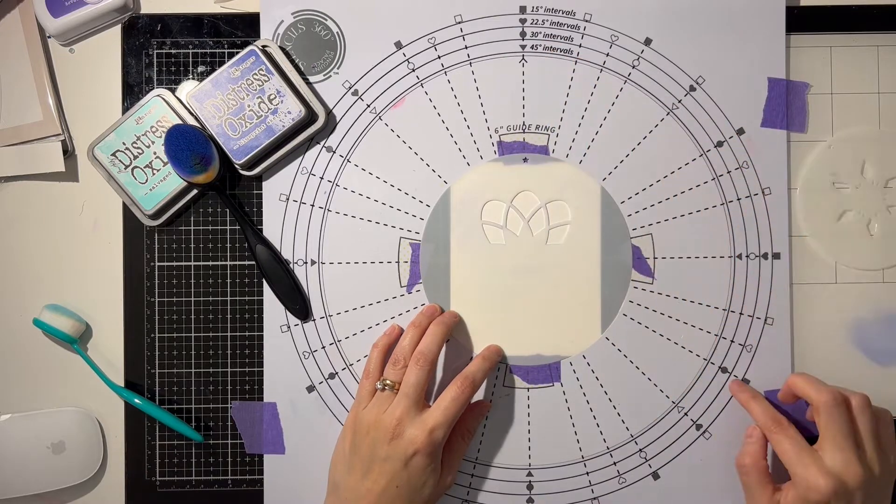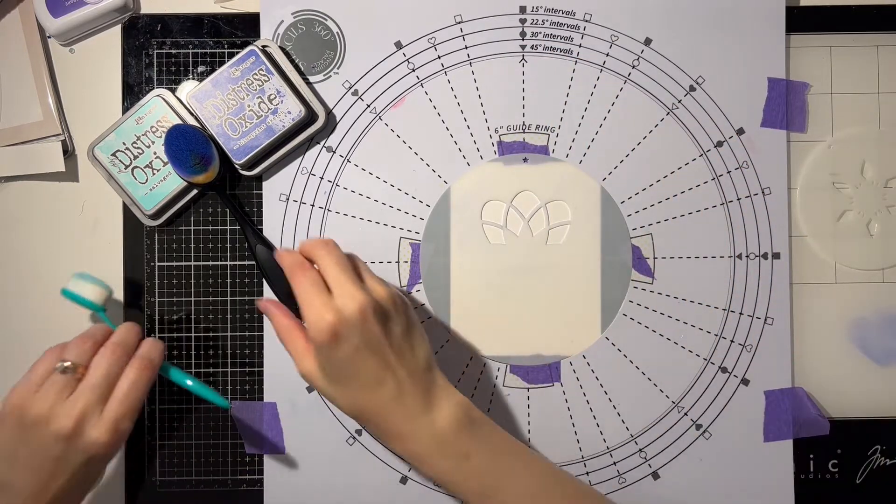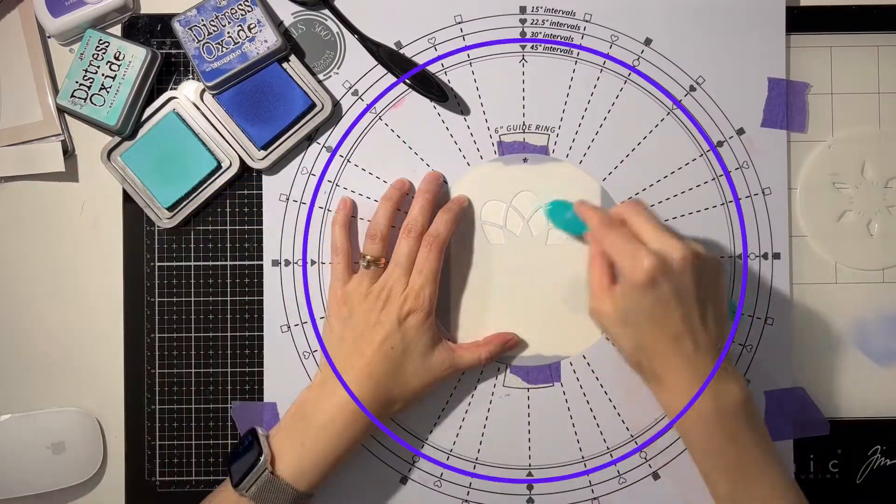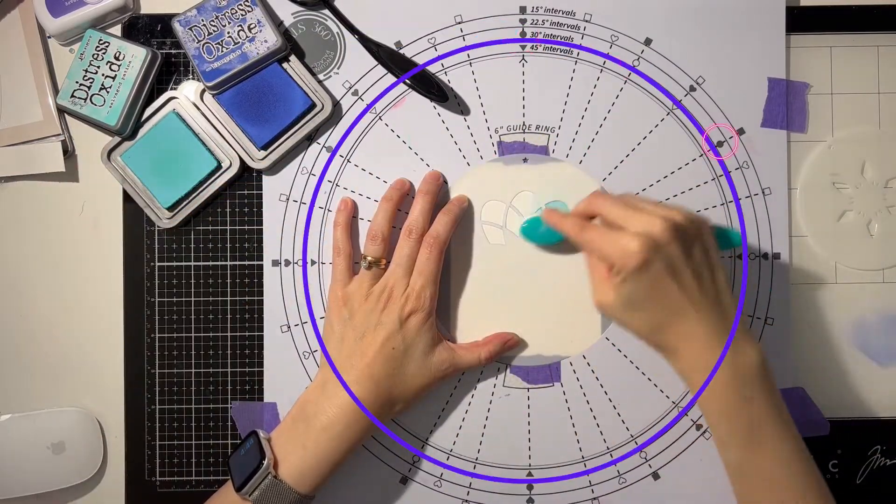In this example, I'll be rotating my stencil at 120 degrees. Now don't panic, that simply means that I'm going to be jumping four circles in each turn.